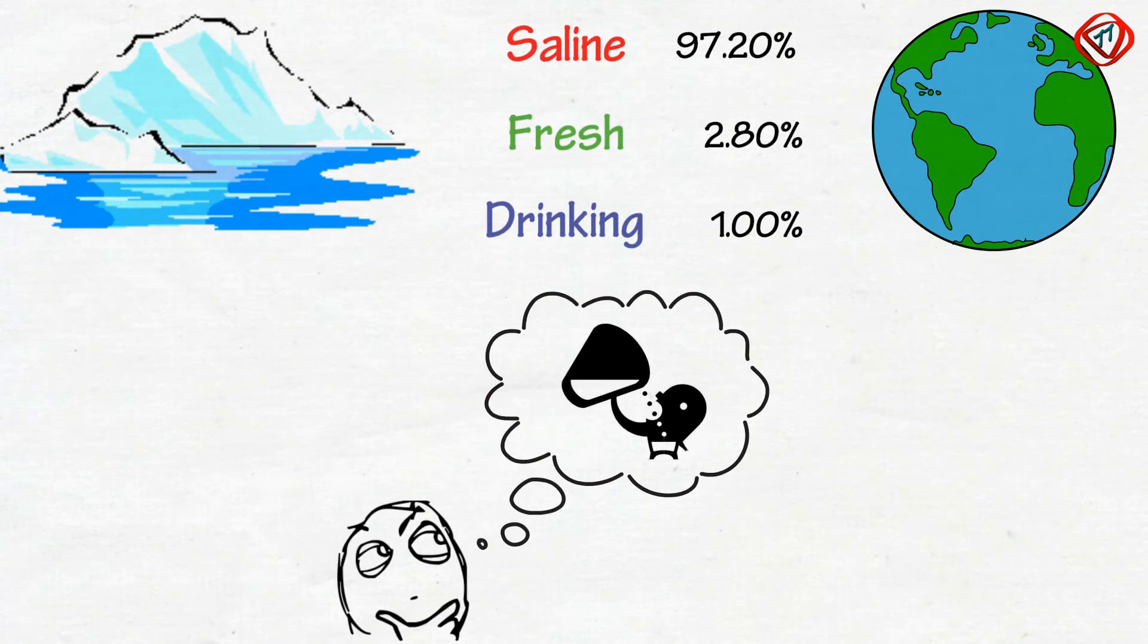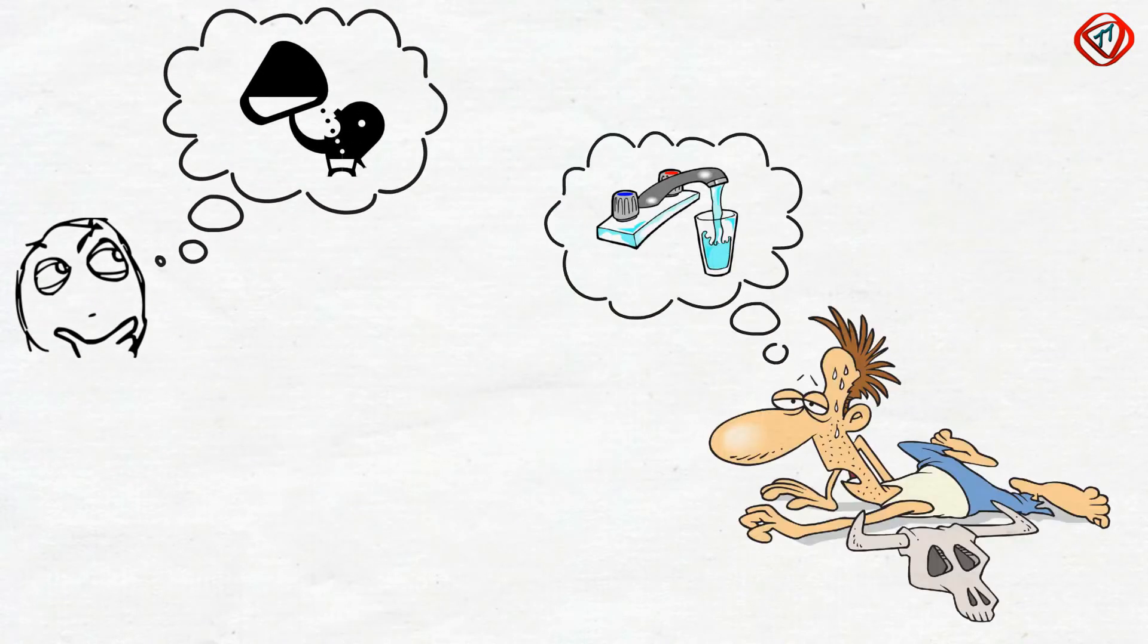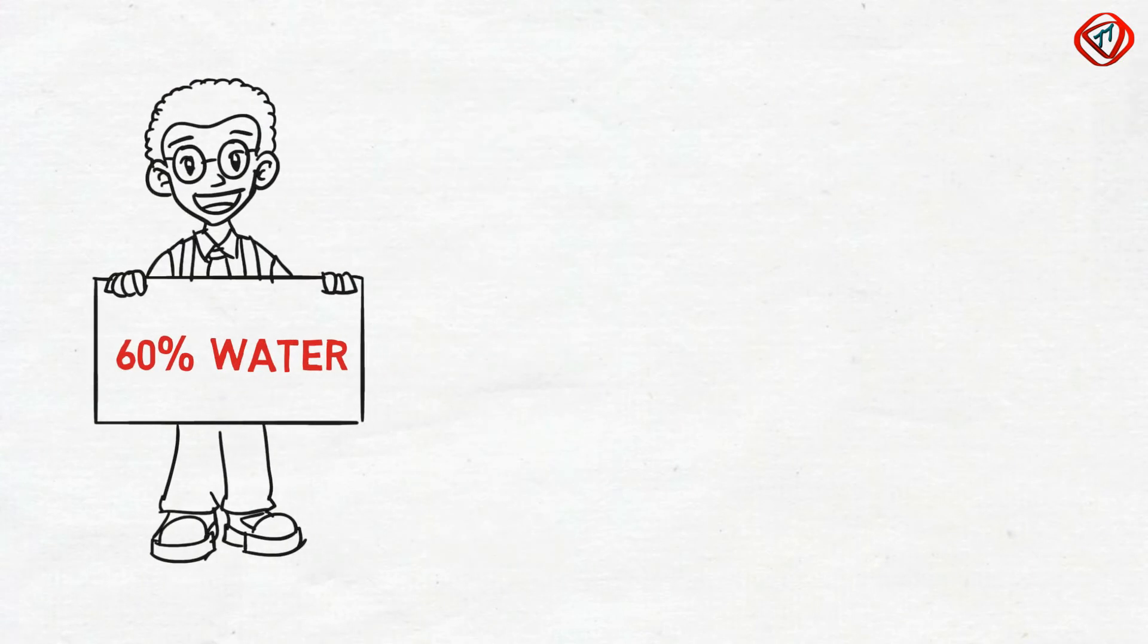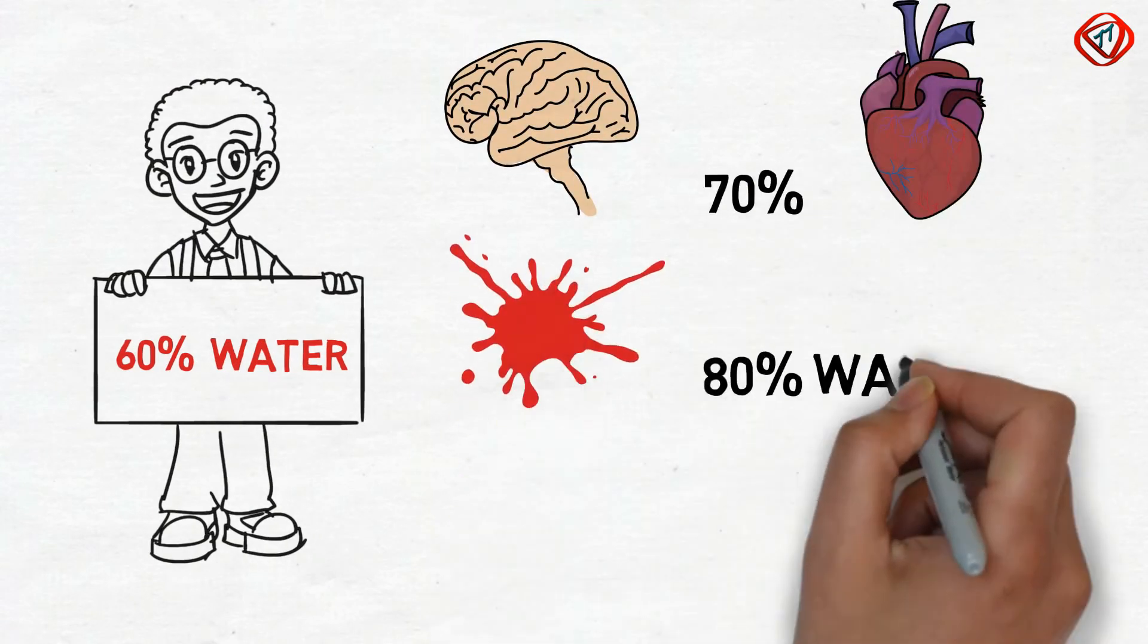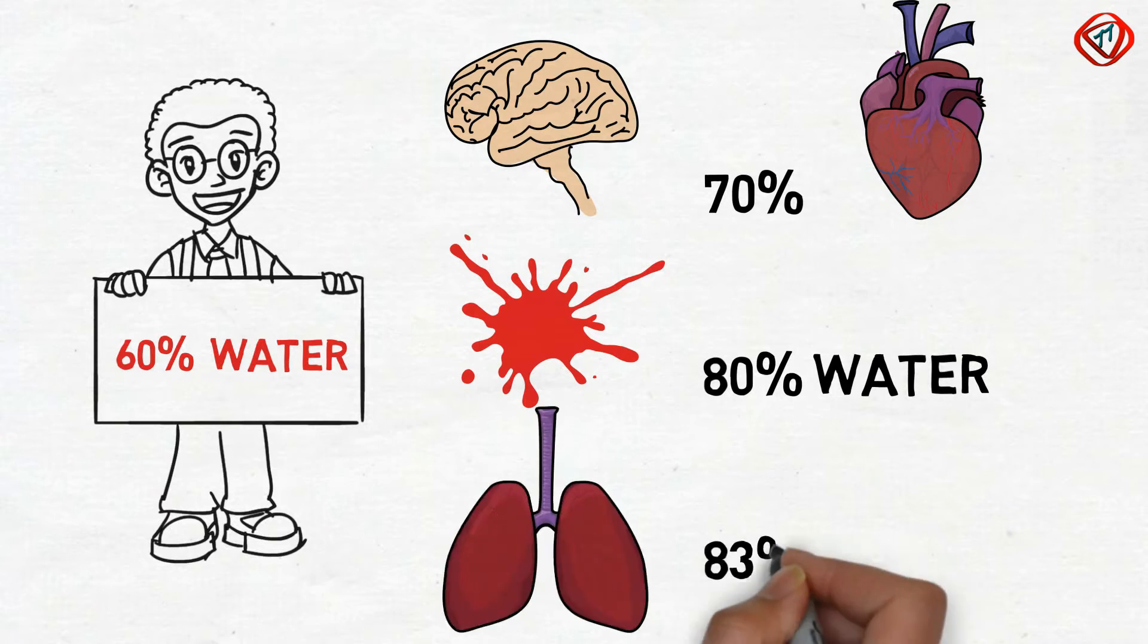But why do we need water? Actually, we can't live without water. An average human is 60% water. Our brain and our heart are 70% water. Blood is 80% water, and our lungs are about 83% water.